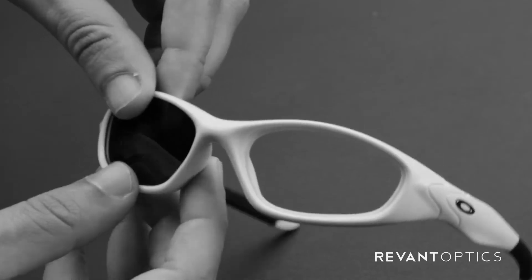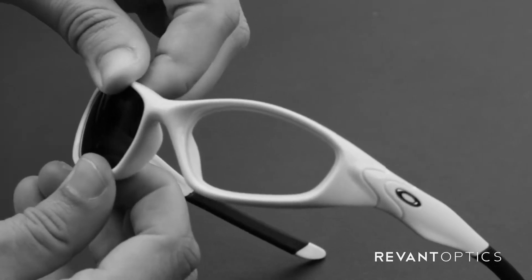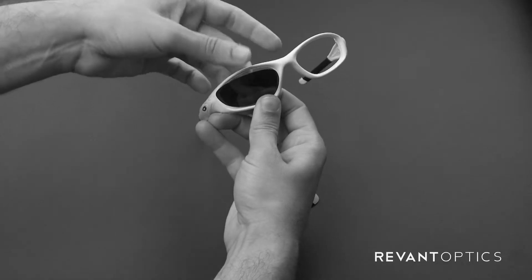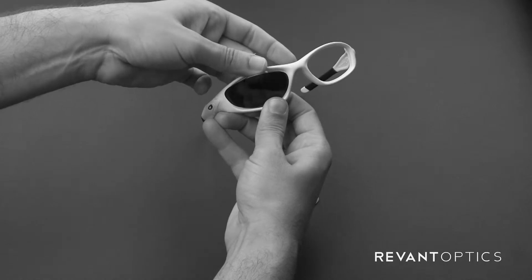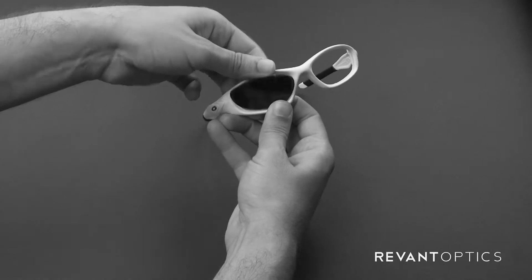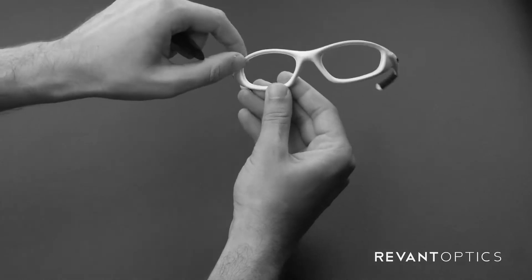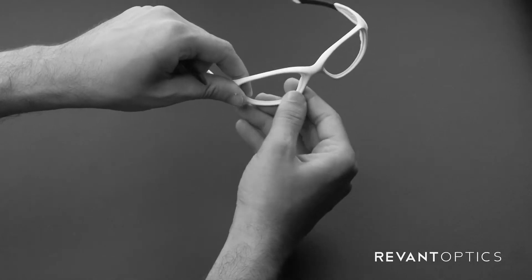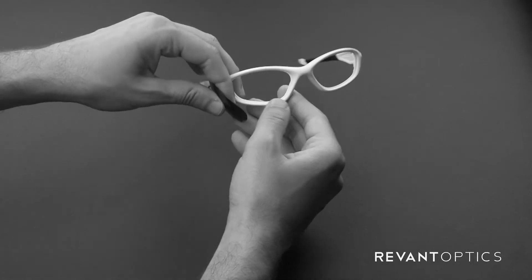Go ahead and do that to this side as well. Pull up and push through. On this particular frame, it's easier to use the top fingers to push through and pop the lens out there. I think the groove on the top is a little bit shallower than on the bottom, so it pops out easier.